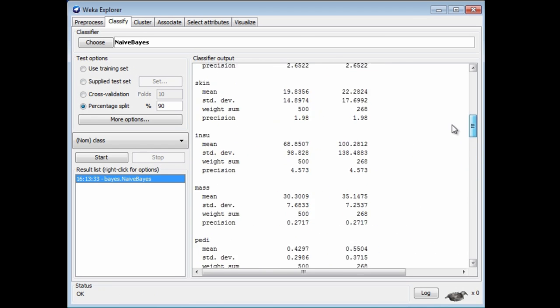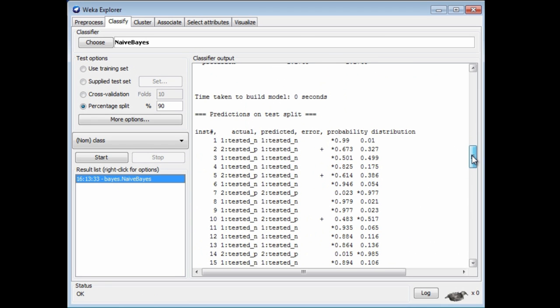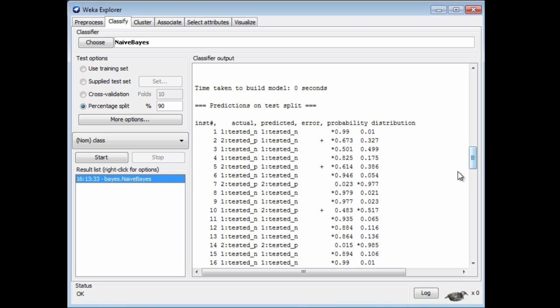What I get here, I want to look at the predictions that have been output. This is a two-class dataset. The classes are Tested Negative and Tested Positive. These are the instances, number one, number two, number three. This is the actual class: Tested Negative, Tested Positive, Tested Negative. This is the predicted class: Tested Positive, Tested Negative, Tested Negative. This is a plus under the error column to say where there's an error, so there's an error with instance number two.